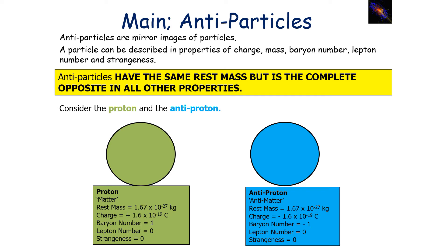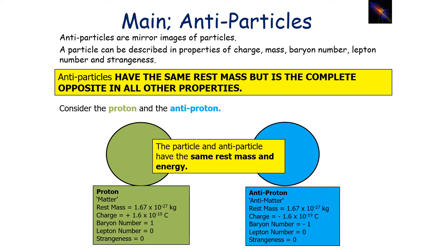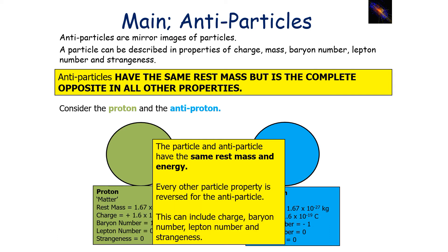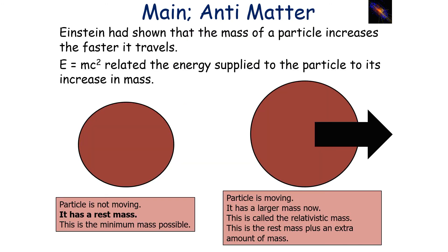Let's consider some matter and some antimatter — a proton and an antiproton. Between the proton and the antiproton, they have the same rest mass, but they have opposite charge, opposite baryon number, opposite lepton number, and opposite strangeness. So the particle and antiparticle have the same rest mass and rest energy, but every other property — charge, baryon number, lepton number, and strangeness — is reversed for the antiparticle.